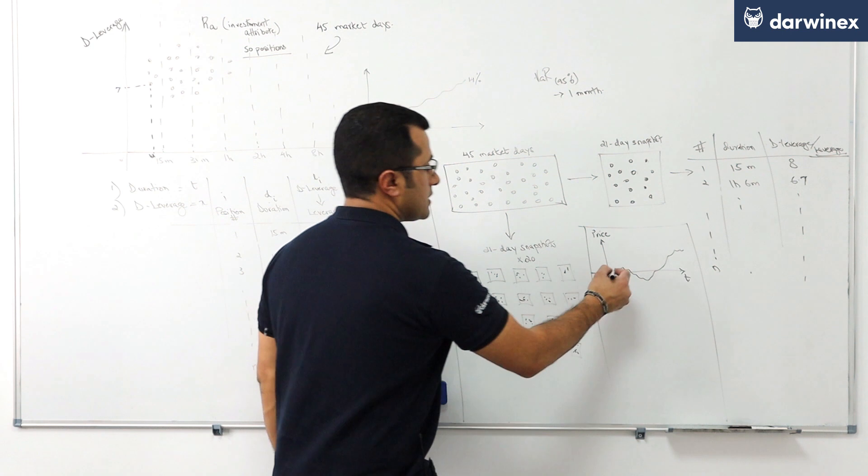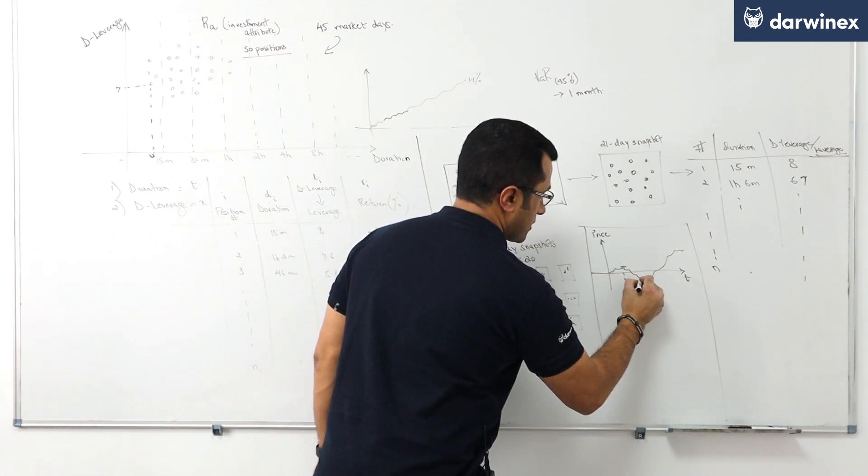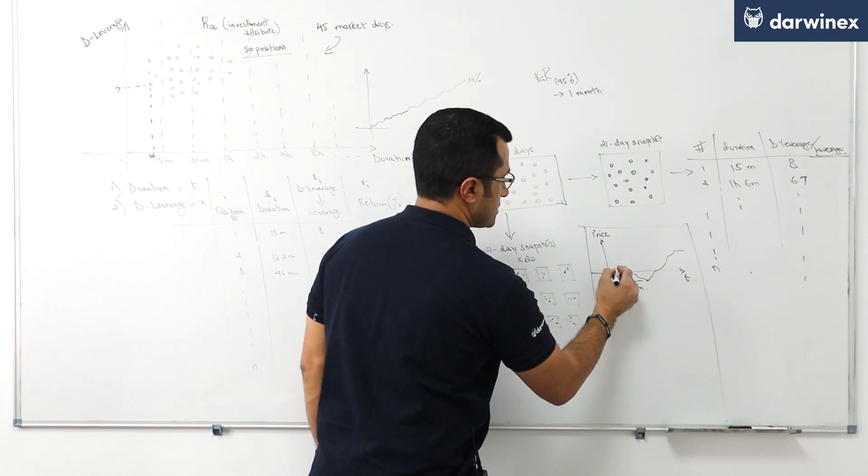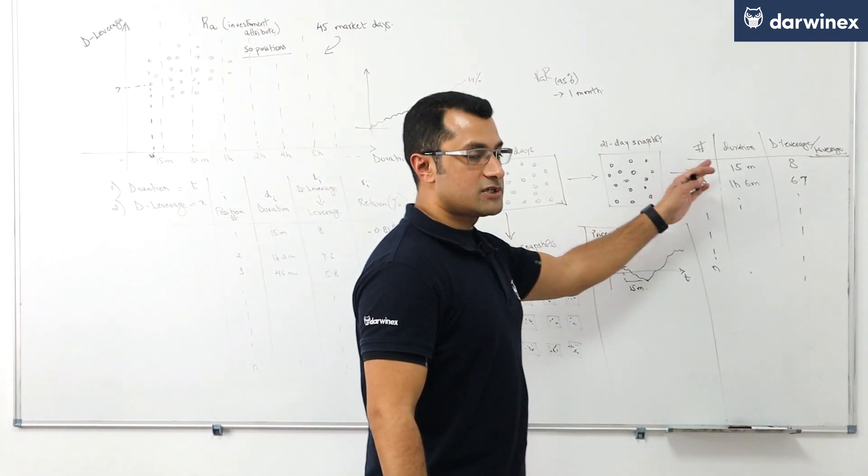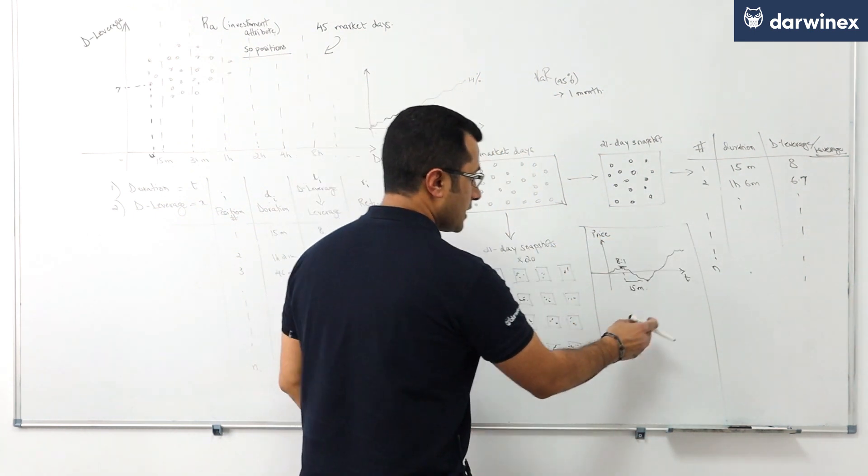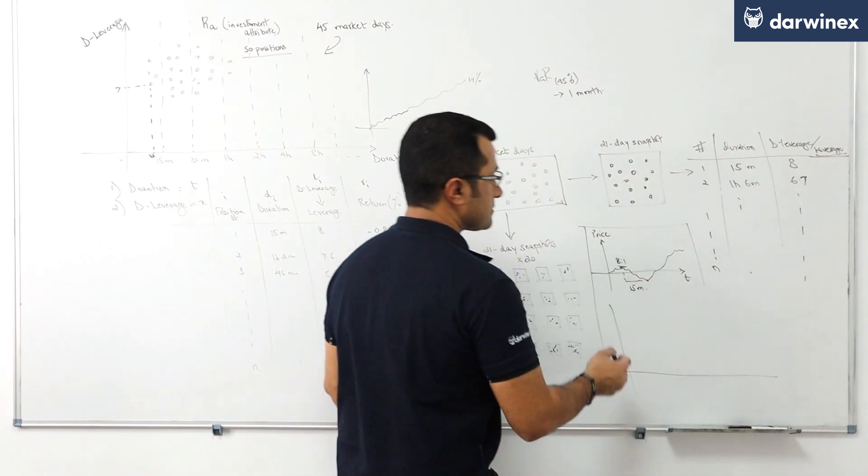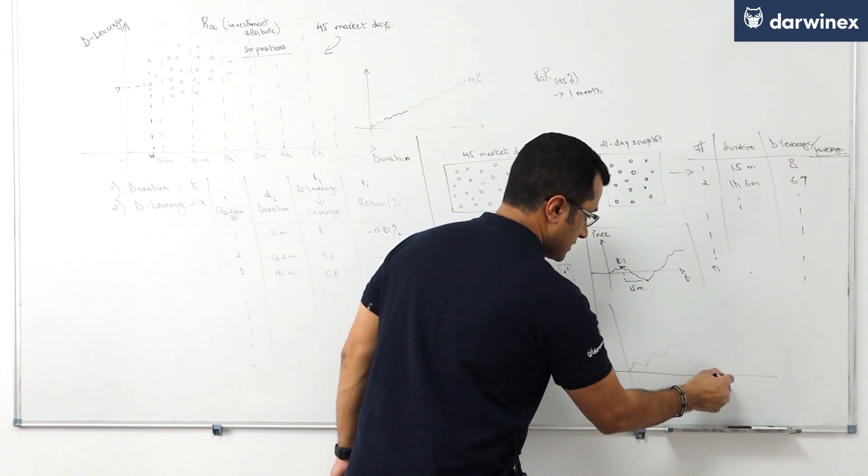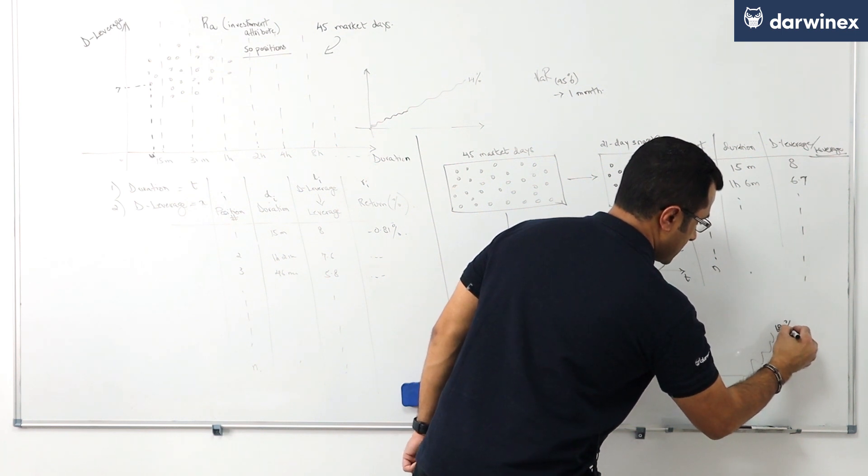So here we have, for instance, the first trade where we took on—ignore the scales—15 minutes worth of a position, and here the position trade was taken at 8-to-1. We do the same for each and every trade, thereby creating a return series for that 21-day period that may look something like this. Let's say that return is 18%.